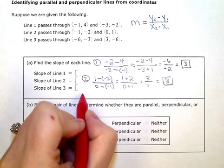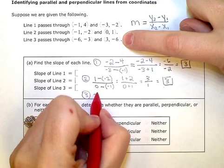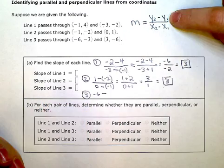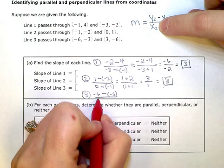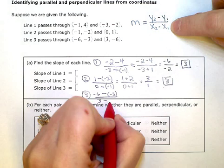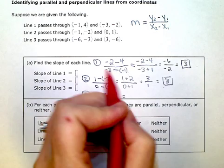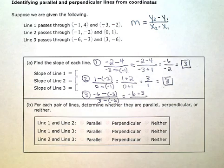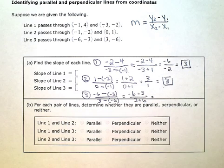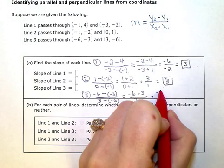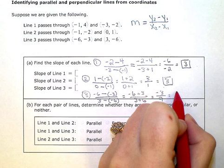Last one, third line here. I'm going to do the slope formula one more time. Y from my second coordinate is negative 6, minus Y from my first coordinate is negative 3. Divided by X from my second coordinate is 3, minus X from my first coordinate is negative 6. I'm going to rewrite the numerator as negative 6 plus 3 and the denominator as 3 plus 6. Negative 6 plus 3 in the numerator is negative 3. 3 plus 6 is 9 in the denominator. And that reduces to negative 1 third.